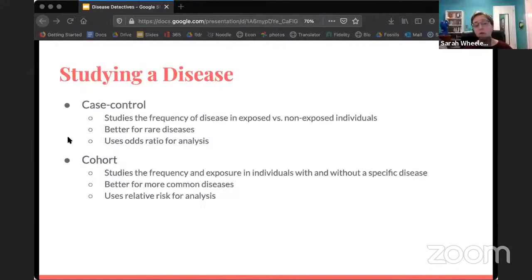When you're studying a disease, there are generally two types of studies. There are case control studies, which are usually involved studying the frequency of disease in exposed versus non-exposed individuals. It's usually better for rare diseases. As far as analysis, it uses the odds ratio, which we'll get into more a bit later. And then there's also the cohort, which studies the frequency and exposure in individuals with and without a specific disease. It's better for more common diseases because it's easier to find enough people. And it uses relative risk for analysis. It's really easy to get them confused. One important thing when you're first starting out is to drill and make sure you know which is which and you understand which of the ratios to use for analysis for the specific one.